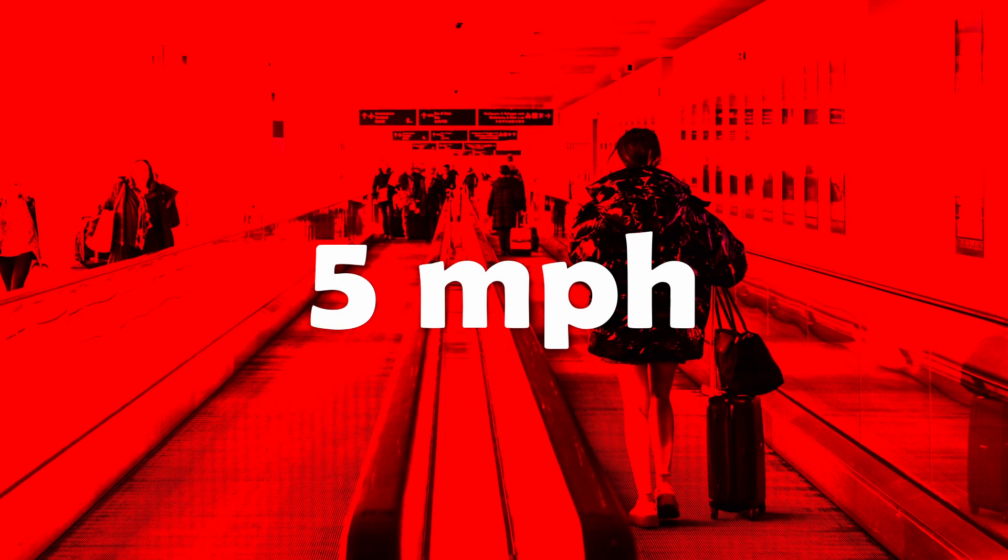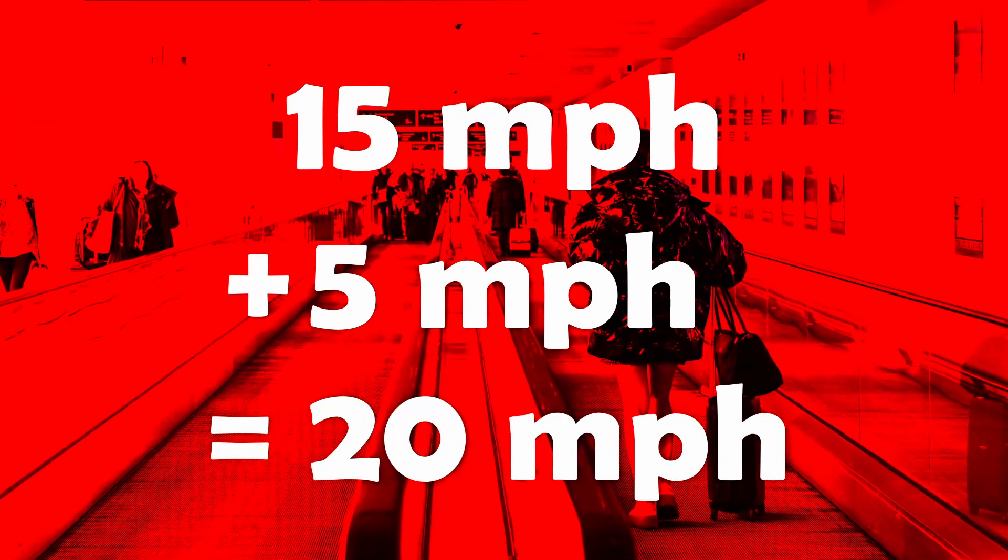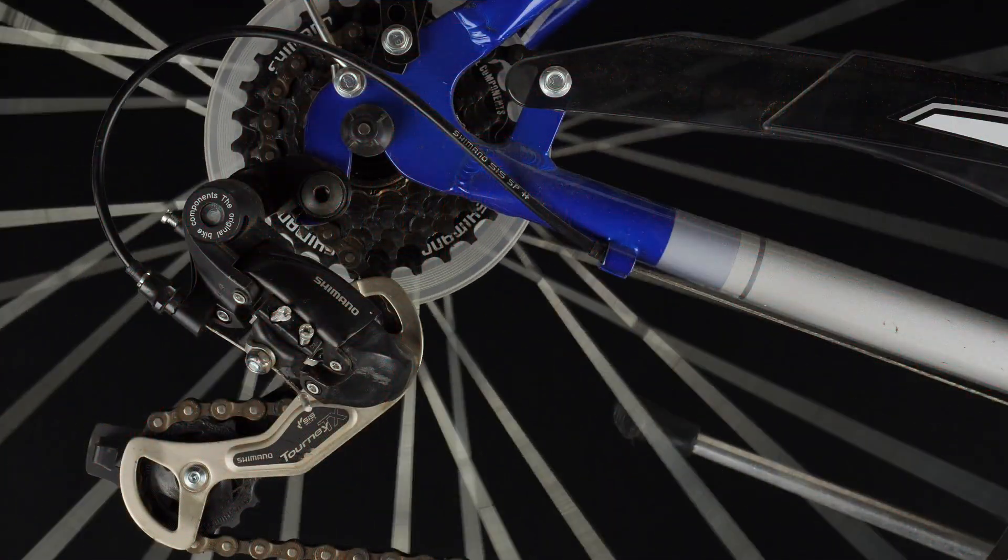But if the belt is moving at 5 miles per hour, then that adds to my speed, and I am now moving past the ground at 20 miles per hour, even though I still can't pedal faster than 15 miles per hour.